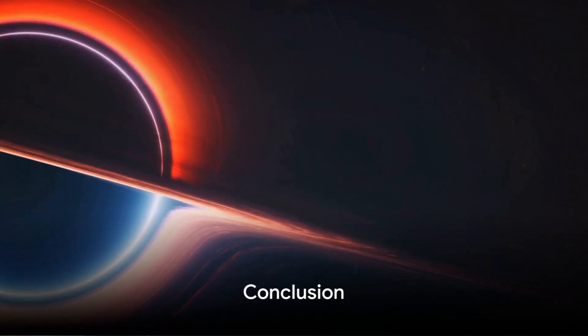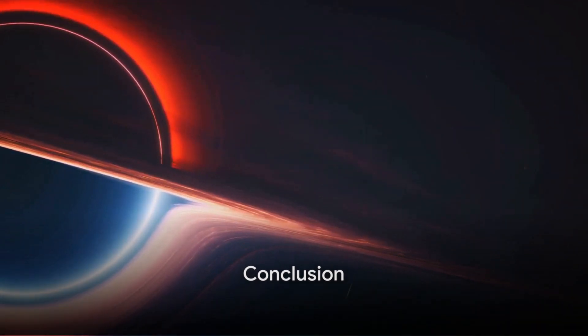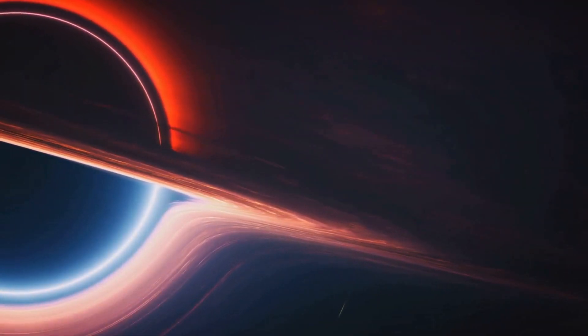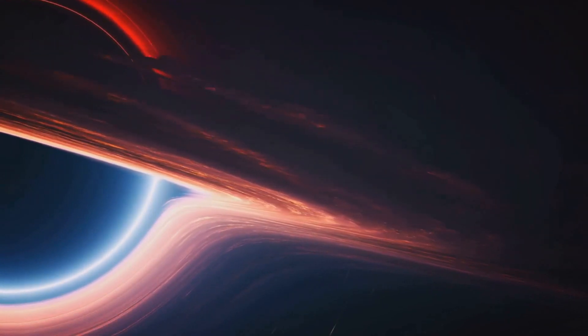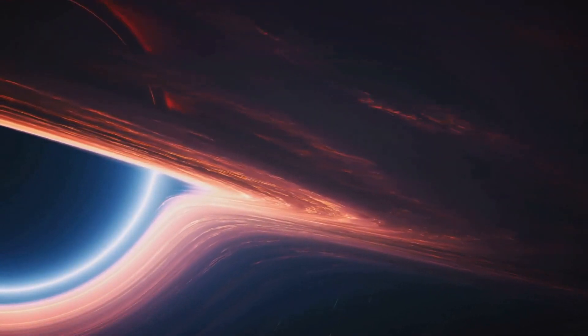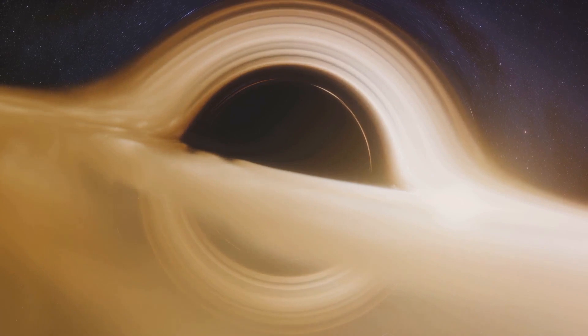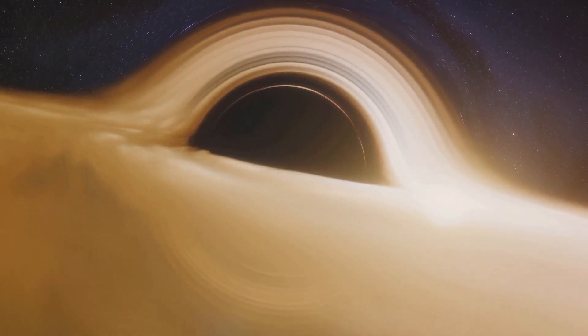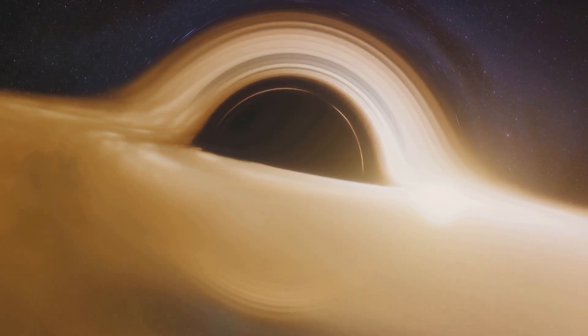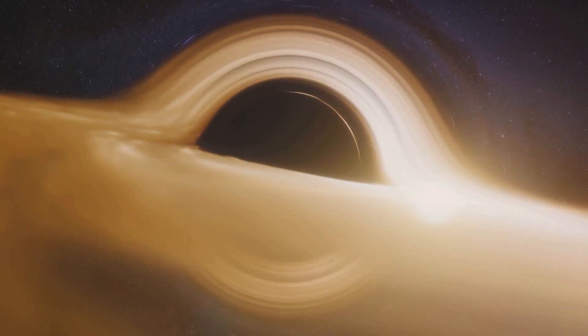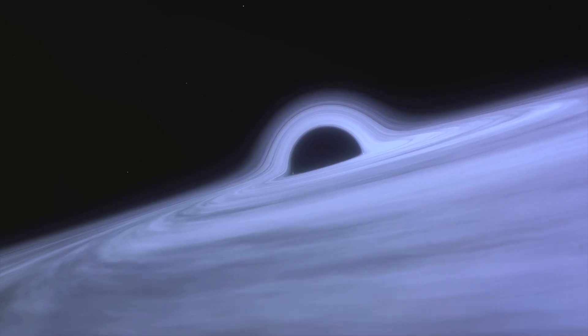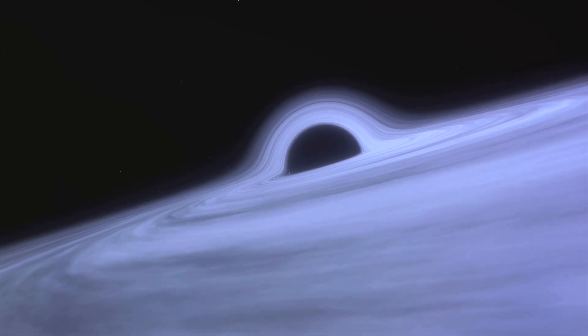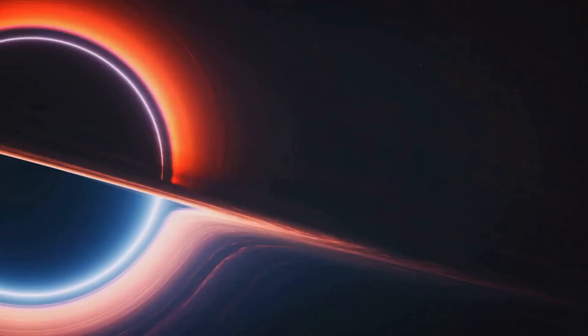Our journey to the heart of the Milky Way has been a cosmic rollercoaster ride. We've ventured into the depths of the galaxy and discovered the colossal Titan that is Sagittarius A asterisk. From its formation, the techniques used to observe it, to the orbits of stars around it, we've delved into the heart of our galaxy to understand this supermassive black hole. We've explored the accretion disk, Hawking radiation, and the dynamic galactic center.